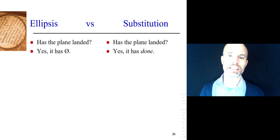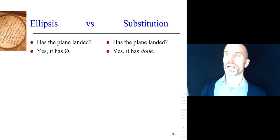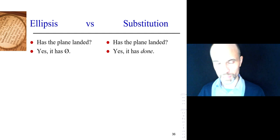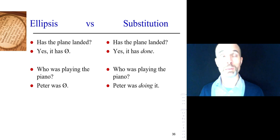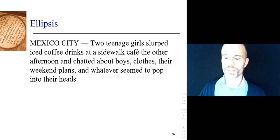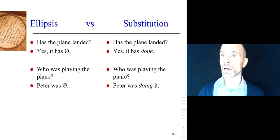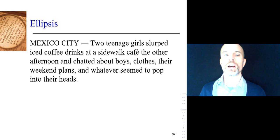Some comparisons. 'Has the plane landed? Yes, it has.' Or 'yes, it has done' — which sounds a little awkward but emphasizes the point. Both mean 'yes, it has landed.' 'Who's playing the piano? Peter was' — verbal ellipsis. 'Peter was playing the piano' with substitution would use 'doing.' 'Peter was doing it' — 'doing' is verbal substitution, and 'it' is the piano, personal reference. The only point: because ellipsis and substitution are the same in many ways, you can always do one or the other — both are always possible. You can use a substitute or you can use ellipsis.